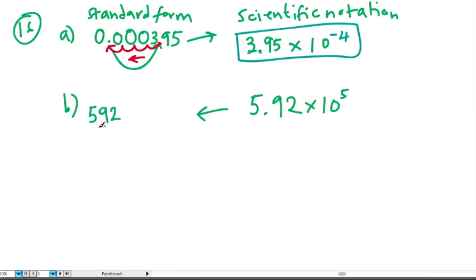We would still have our 5, 9, and 2, but what's really happening is that we are moving the point from where it was five spaces to the right: one, two, three, four, five. I can put my point there and in the empty spots I need to put in zeros. So our final answer is 592,000.